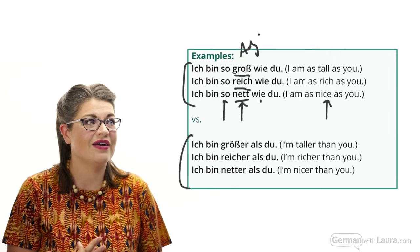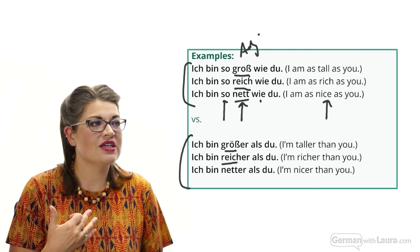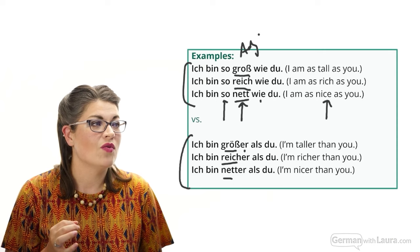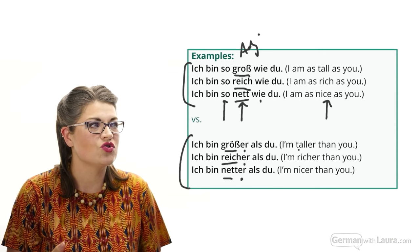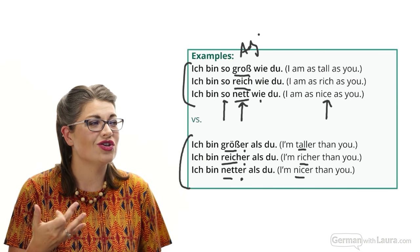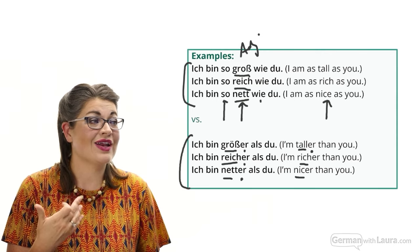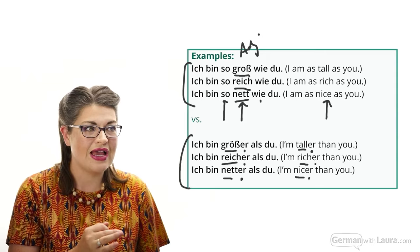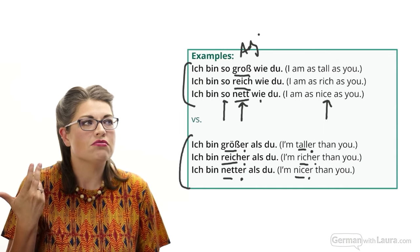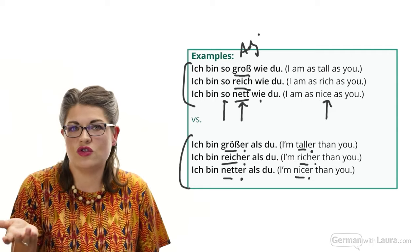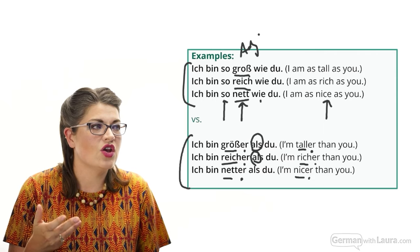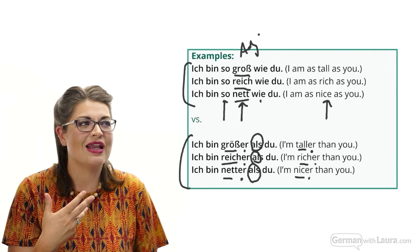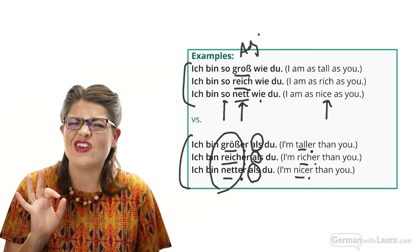For unequal comparisons, notice that the base adjective — groß, reich, nett — is put into its comparative form by adding '-er,' exactly what happens in English: taller, richer, nicer. It might be tempting to think you just need to choose 'so wie' for equal and 'als' for unequal — but there are more components at play, such as adjective forms and the case system, and you need to know those too.